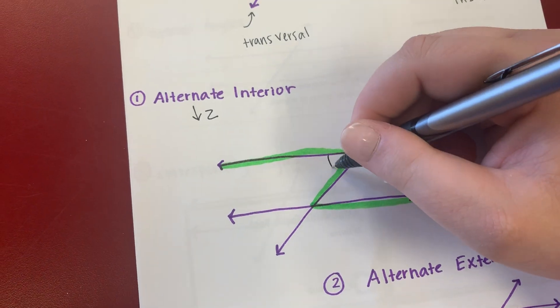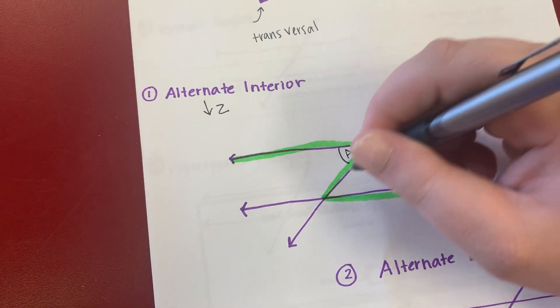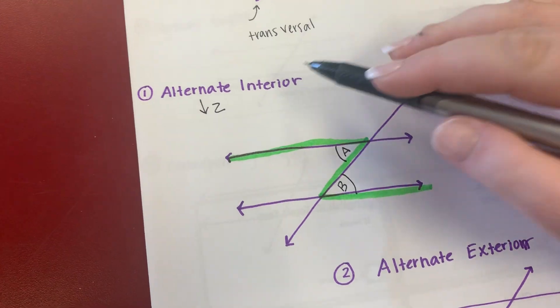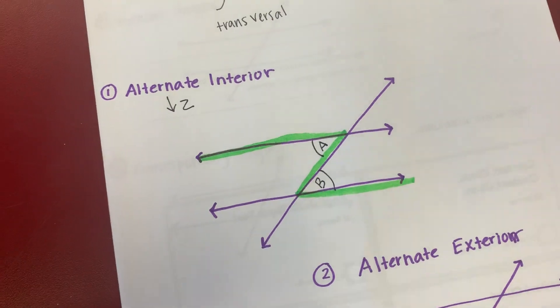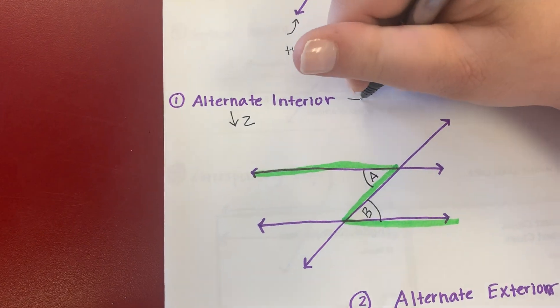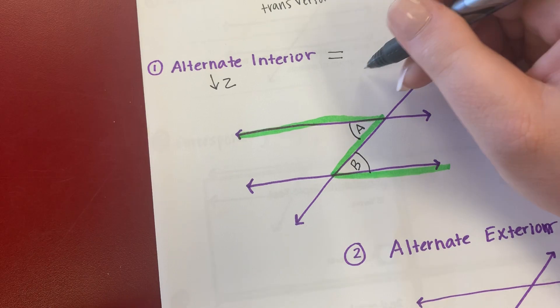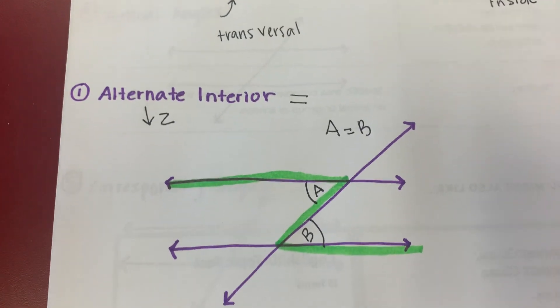Look at these angles here. I have angle A and angle B. Interior on the inside. Those angles are alternate interior. And what does that mean? They equal. So now I know that A equals B. Angle A and angle B equal.